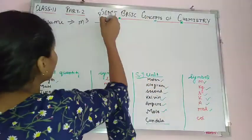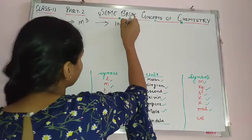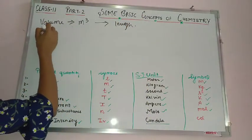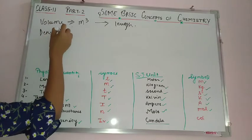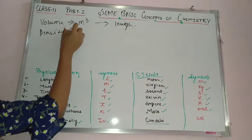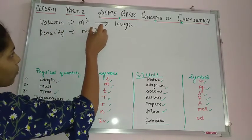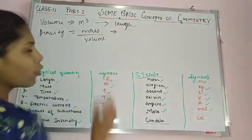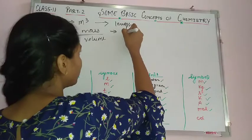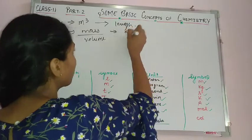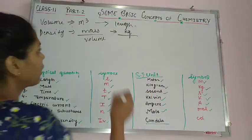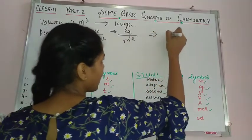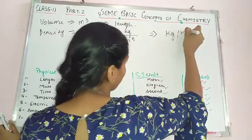What is density? Density is mass divided by volume. The SI unit of mass is kg and the SI unit of volume is metre cubed, so the SI unit of density is kg per metre cubed (kg/m³).